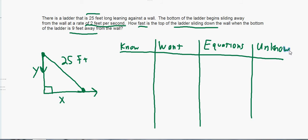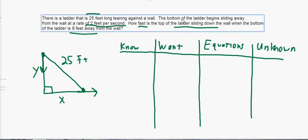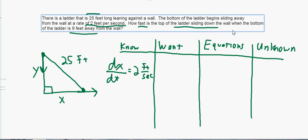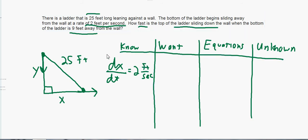What we know is easy — go through the problem using the variables we've defined. The bottom of the ladder is sliding away from the wall at two feet per second; that's x changing, the rate of change of x with respect to time. That is dx/dt equals two feet per second. If they told us the top of the ladder was sliding down, that would be dy/dt — and in fact that's what we want to find, so that goes in the 'want' column. We also know the bottom of the ladder is nine feet away, so x equals nine.